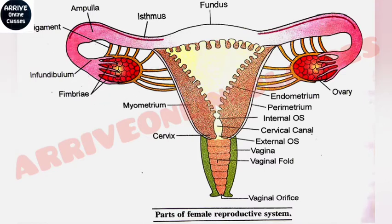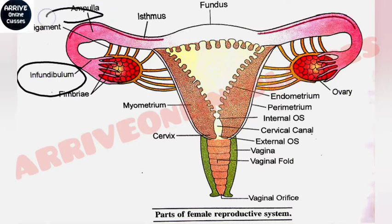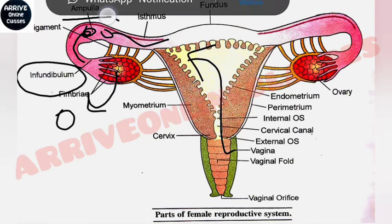The whole tube is called the fallopian tube. The first part is the infundibulum — this is the nearest part to the ovary. The second region after the infundibulum is the ampulla. A key question comes from here: when the ovary releases the egg cell, it is sent to the ampulla region, where the sperm will enter and fertilization occurs.